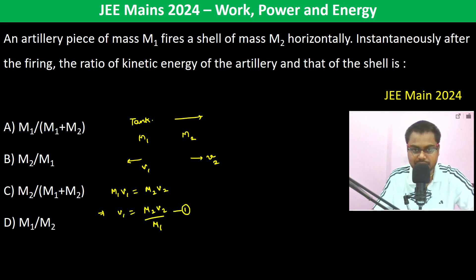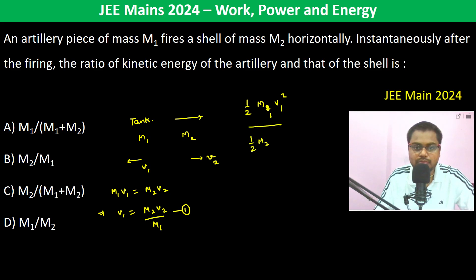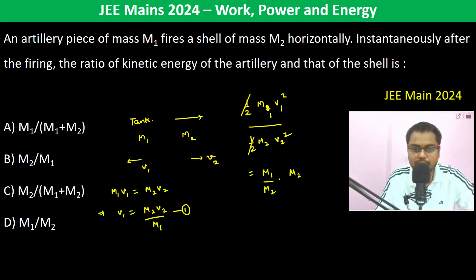Now we have to find the ratio of the kinetic energies: half M1·V1² divided by half M2·V2². The halves cancel. V1 by V2 is M2 by M1, so V1² by V2² is M2² by M1². Substituting, M1 by M2 into M2² by M1² simplifies to M2 by M1.